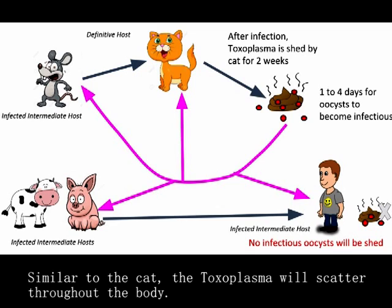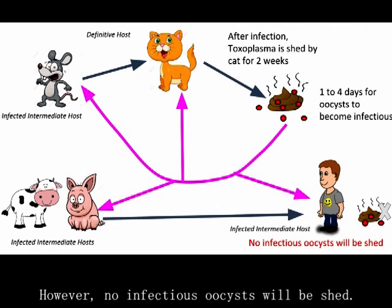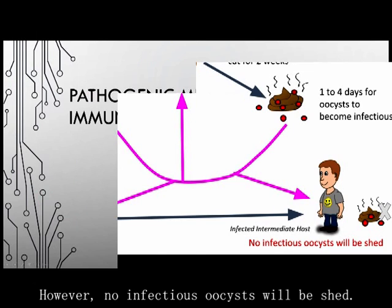Similar to the cat, the Toxoplasma will scatter throughout the body. However, no infectious oocysts will be shed.